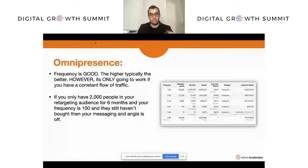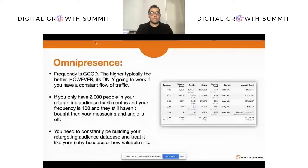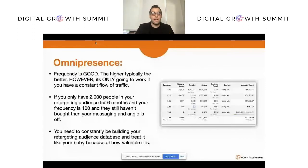Omnipresence equals frequency — and the higher the frequency, typically the better. However, it only works if you have a consistent flow of traffic. If you only have 2,000 people in your retargeting audience for six months and the frequency is 100 and they still haven't bought, then your messaging and angle isn't the best. You need to constantly be building your retargeting audience database with cold traffic. Treat it like your baby — you can build it to 2, 3, 4, or 5 million people. When you launch a new product and hit those people, sales will come in like an avalanche.